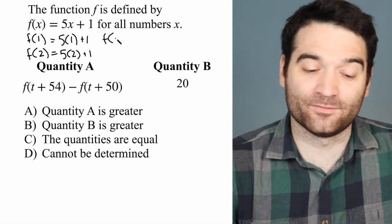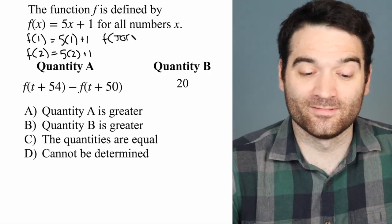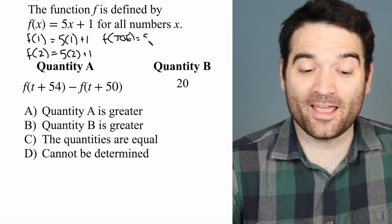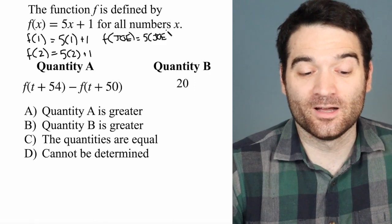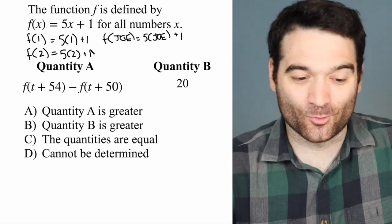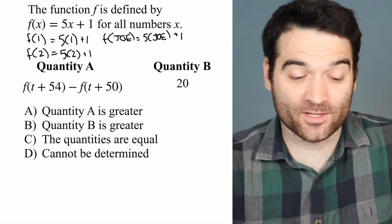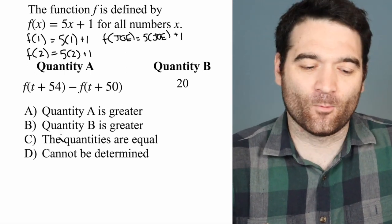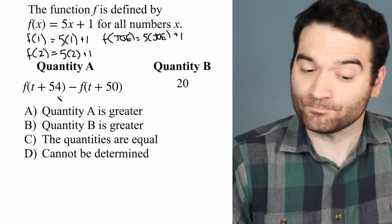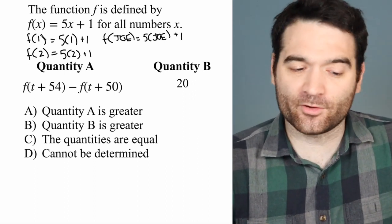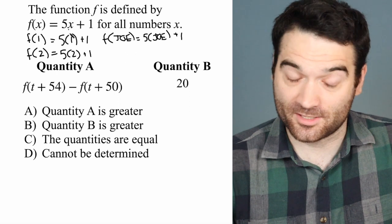And then f of Joe would be 5 times Joe plus 1. And even if you aren't rusty with functions, I really like doing this for myself just as sort of a warm-up when I'm going to start plugging anything in. So the idea is whatever goes in the x spot here gets substituted in there.